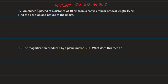Hello friends, good evening. Here I am going to solve some NCERT examples related to mirrors — these are numericals for class 10th. Question number 12: an object is placed at a distance of 10 centimeters from a convex mirror of focal length 15 centimeters. Find the position and nature of the image. We simply use the mirror formula: 1/v + 1/u = 1/f.